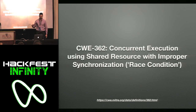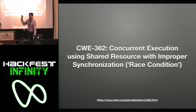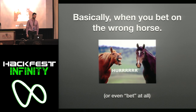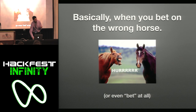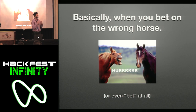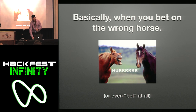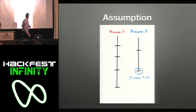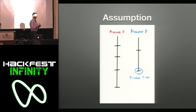A race condition is concurrent execution using shared resources and improper synchronization — that's the CWE standard definition. But really, it's when you're betting on the wrong horse or even betting at all. So we have two processes: process X has four steps, process Y has two. Typically, process Y is going to finish first because there's only two steps — it doesn't take as long. Oftentimes, that's the assumption.